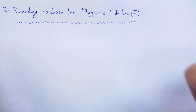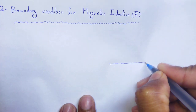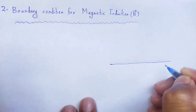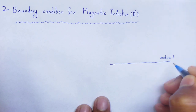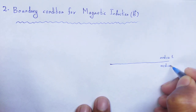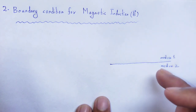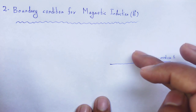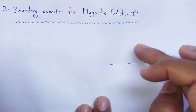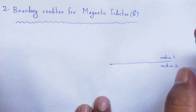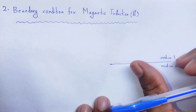To work with the divergence of magnetic field induction, we construct an interface between two media — medium 1 and medium 2. Magnetic induction B is a vector, so in medium 1 and medium 2 it has two components: one normal to the interface and another tangential to the interface.